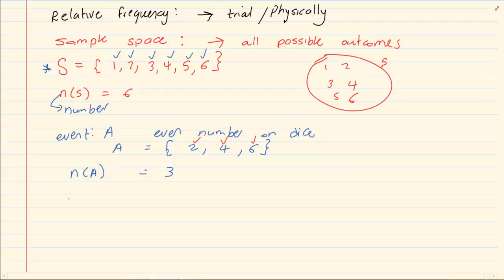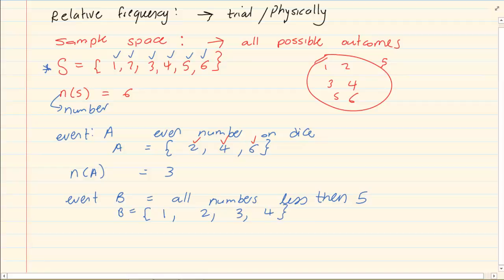Let's say my event, let's label it B, is all the numbers less than five. So that would be one, two, three and four. So the n, the number of B is equal to four because there are four choices. One, two, three and four.